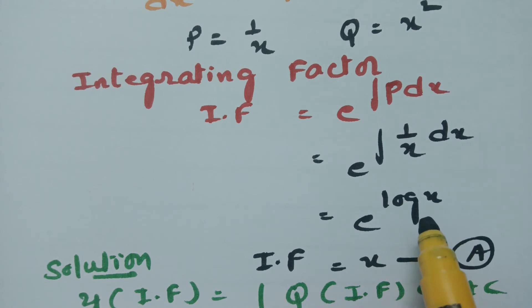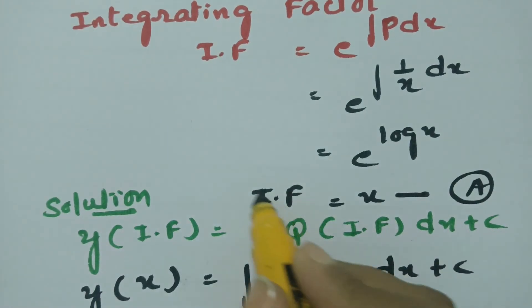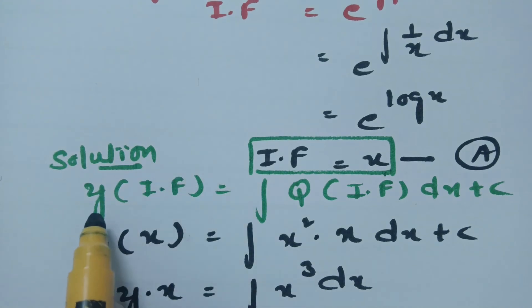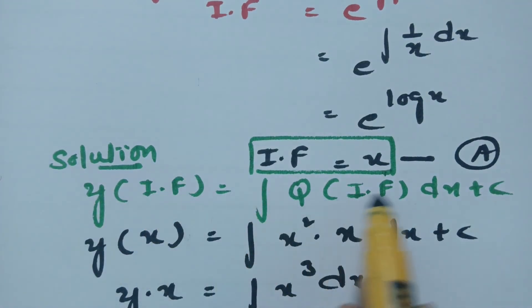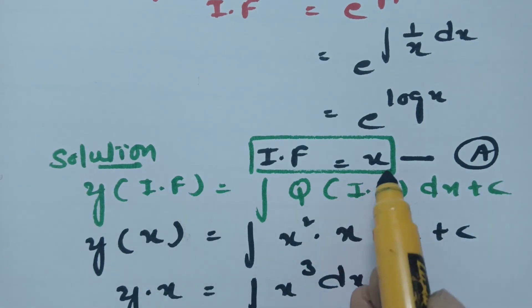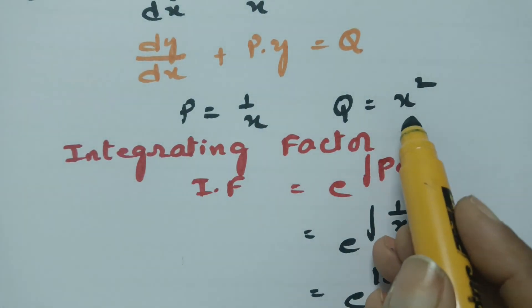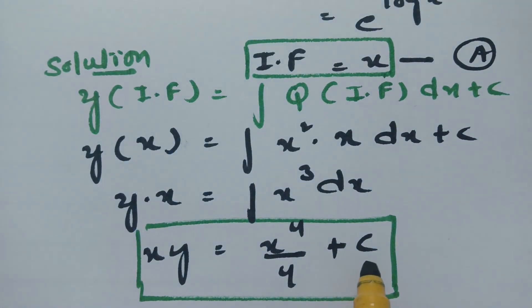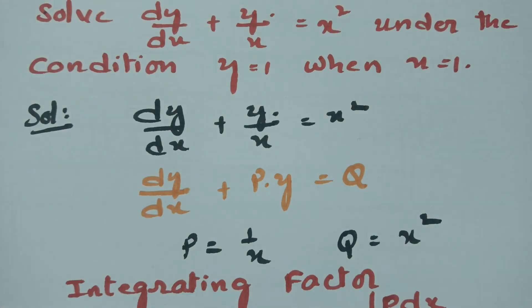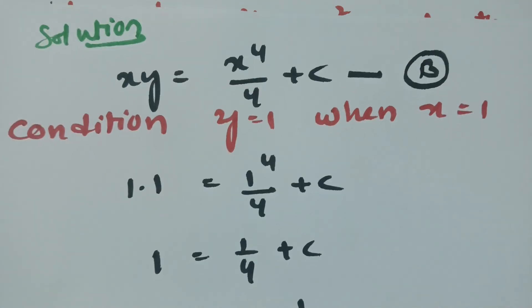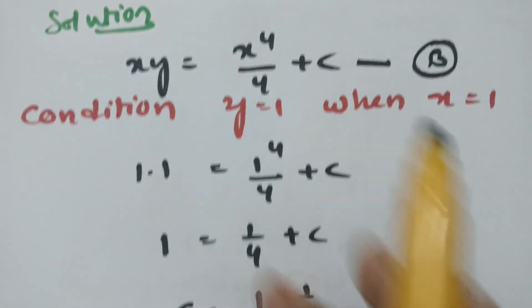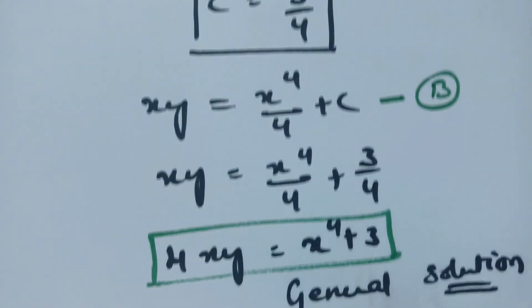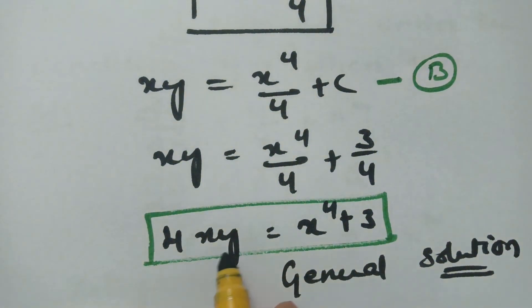After taking p and q values we find the integrating factor: e to the power of integral p dx. Since p equals 1/x, its integral is log x, giving integrating factor equal to x. The solution formula is y times integrating factor equals integral of q times integrating factor dx plus c. With q equals x squared and IF equals x, this gives x cubed, and after integrating, x⁴/4 plus c. Applying the condition y equals 1 when x equals 1 gives c equals 3/4, and the required solution is 4xy equals x⁴ plus 3.